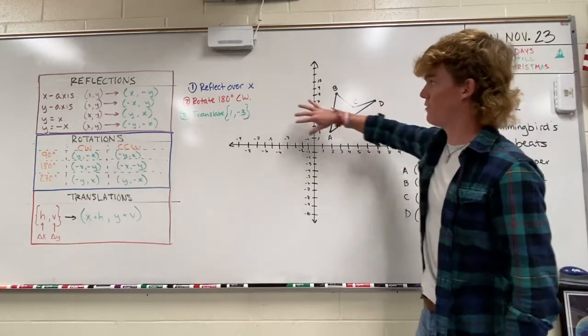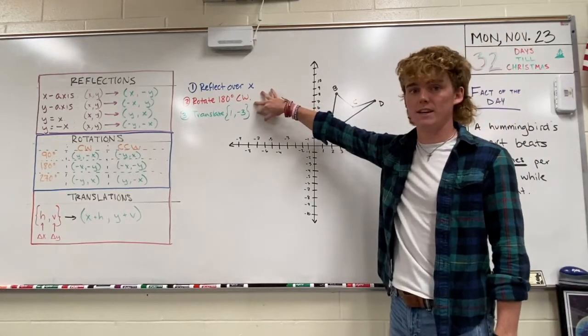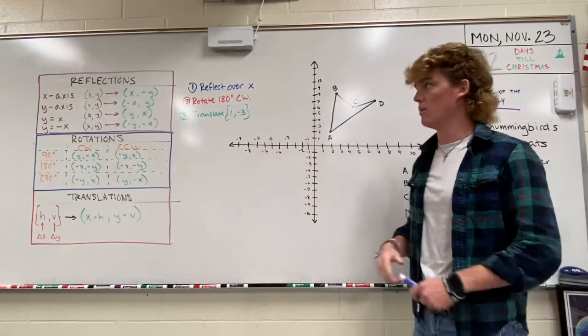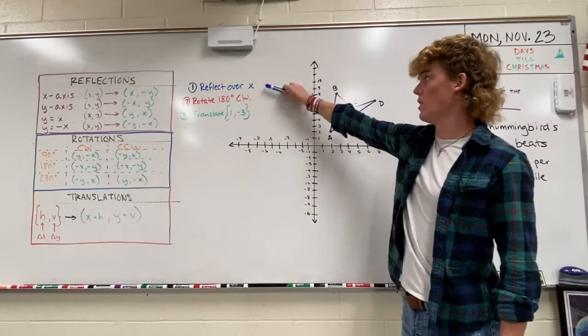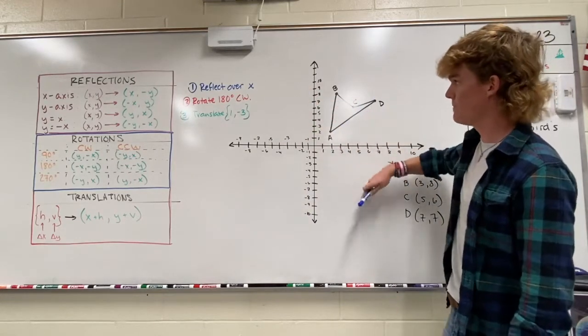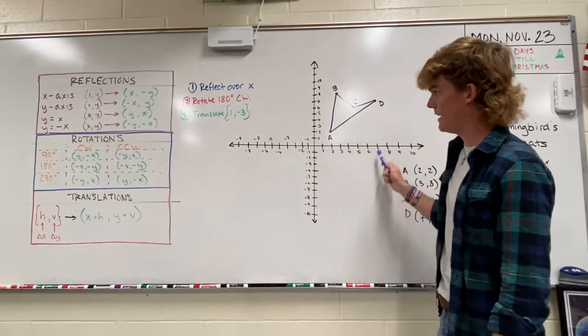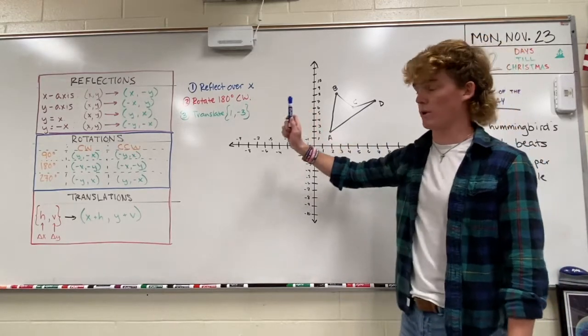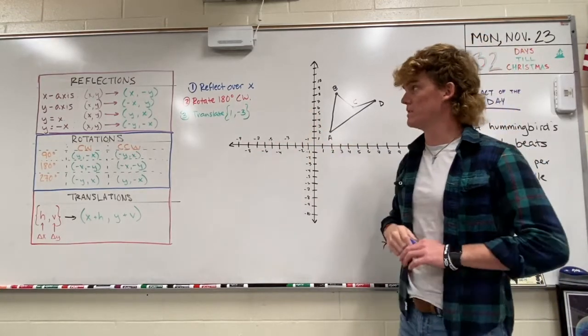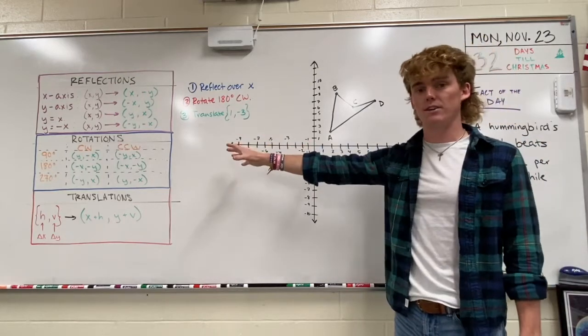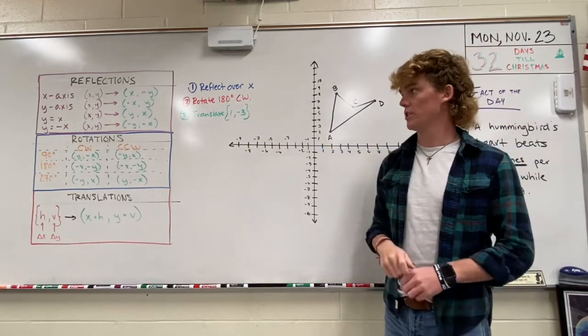Basically I have one image and I'm going to perform all three transformations into one problem. So we're first going to reflect over the x-axis, so it'll come down here. We're going to rotate 180 degrees clockwise, and then we're going to translate it following those specific instructions. And then I have our patterns that are very important to follow in this chart to the right.